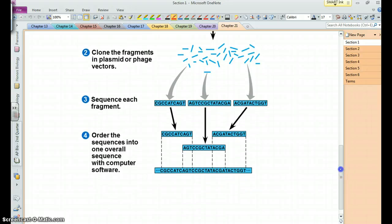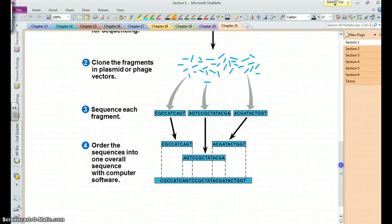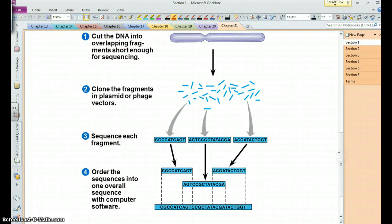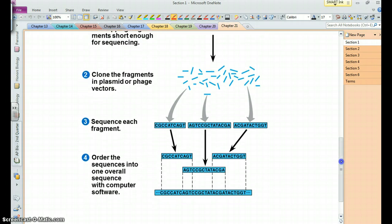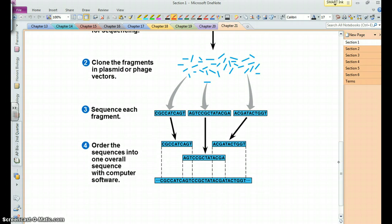And it's an alternative to the Sanger method, and it's sort of considered a somewhat quicker method because you just chop the whole chromosome up, make copies of all those pieces, and then sequence those pieces, and that allows you to then get the whole chromosome at sort of one time.